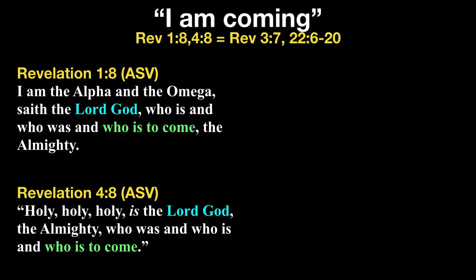Another statement that both Jehovah God and Jesus say in Revelation is that they are both coming. Revelation 1:8 says, I am the Alpha and the Omega, saith the Lord God, who is and who was and who is to come, the Almighty.